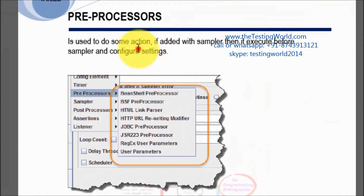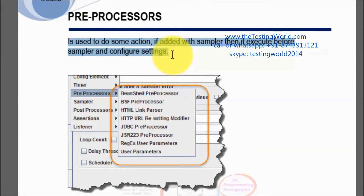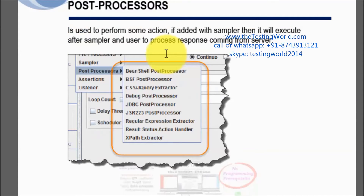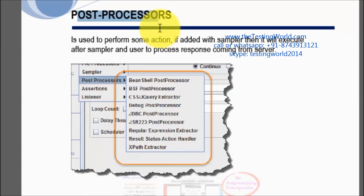Moving to preprocessors — a preprocessor executes before the sampler and is used to make changes to it. The difference between a config element and a preprocessor is: config elements apply configuration to all requests going to the server, whereas preprocessors are used when you want to make changes to a particular sampler. Post processors work similarly but execute after the sampler — they are used to validate or fetch data from the response coming from the server. A post processor also works on a single sampler.